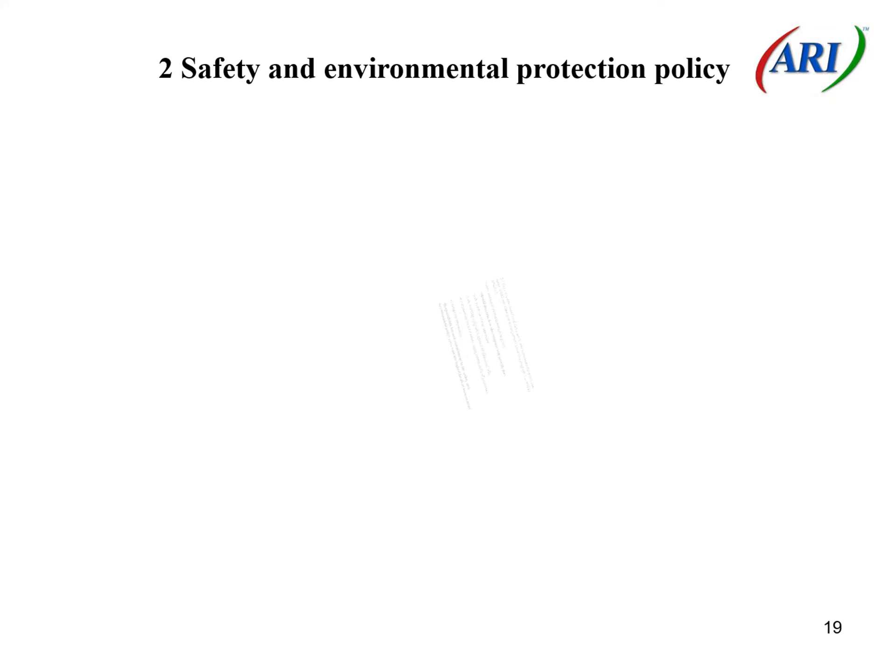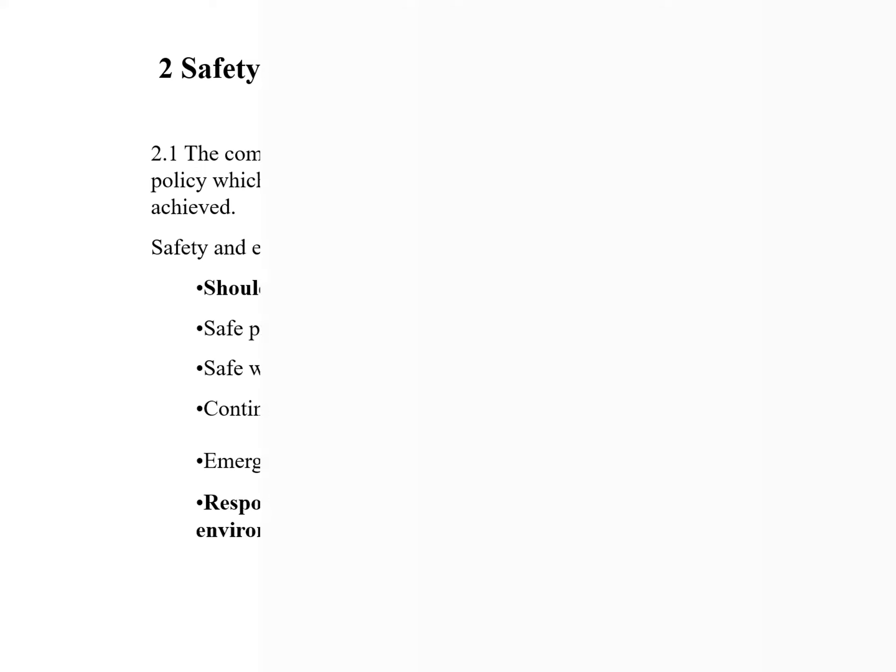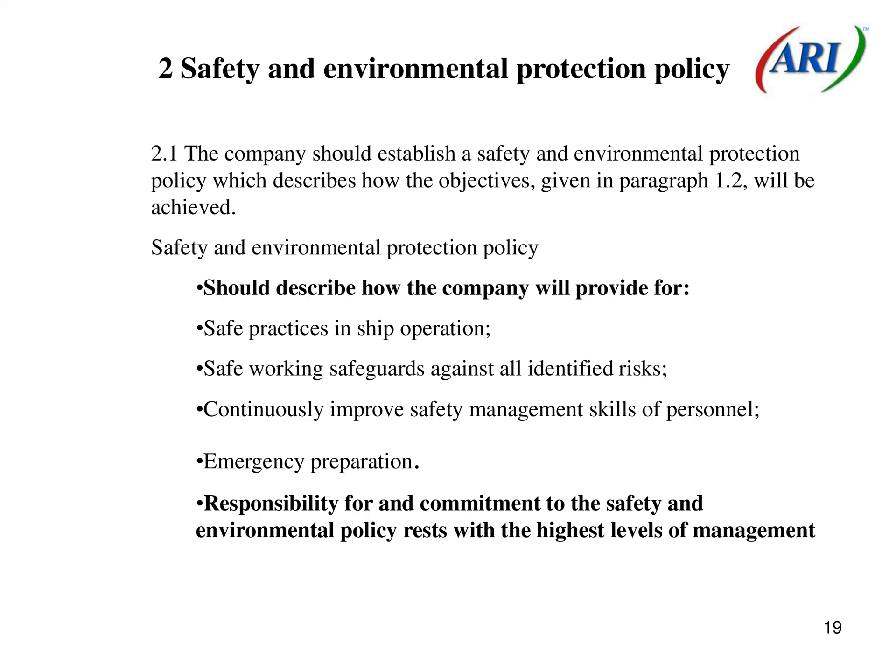Section 2: Safety and Environmental Protection Policy. 2.1 The company should establish a safety and environmental protection policy which describes how the objectives given in paragraph 1.2 will be achieved. It should describe how the company will provide for safe practices in ship operation, safe working safeguards against all identified risks, continuously improve safety management skills of personnel, and emergency preparation. Responsibility for and commitment to the safety and environmental policy rests with the highest levels of management.